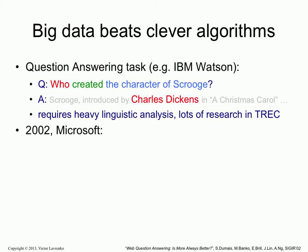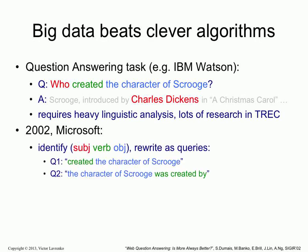Then something interesting happens. In 2002, Microsoft comes along and says, let's see how far we can get with fairly simple stuff — no heavy linguistics. What we're going to do is look at the question: who created the character of Scrooge? We're going to do some surface-level chunking, not even real parsing, and figure out the subject, verb, and object. So who is the subject, created is the verb, and the rest is the object. Then we're going to take the question and rewrite it in a couple of simple patterns.